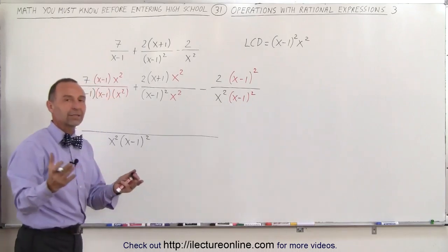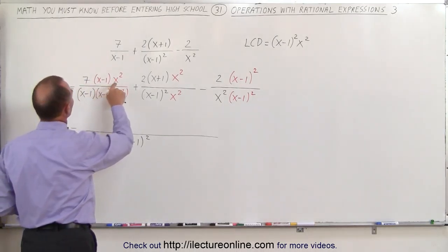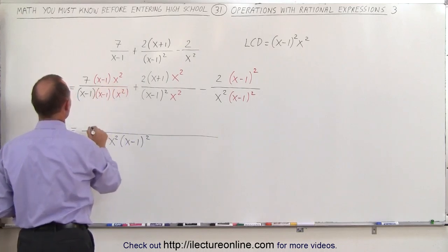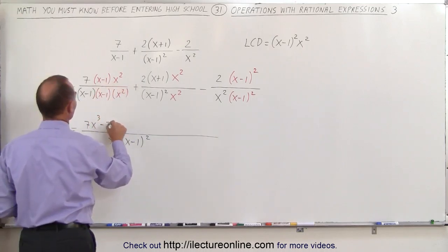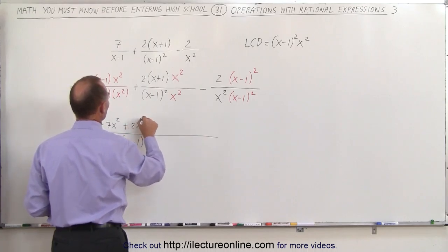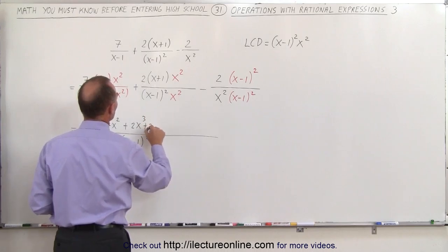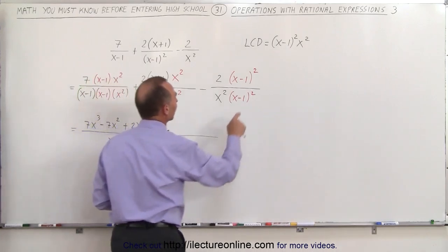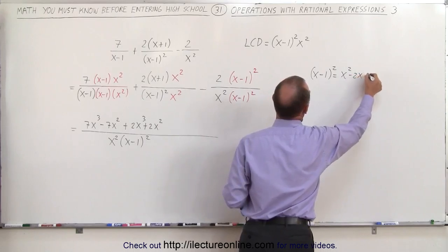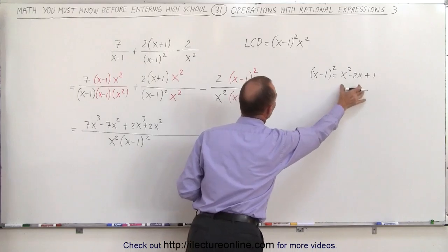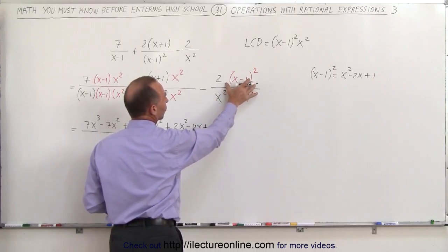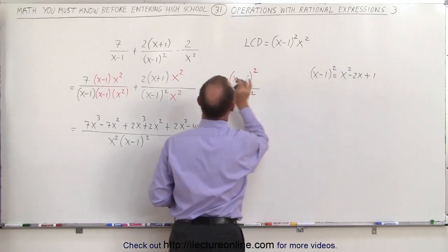I'm going to multiply these out and collect common terms for the numerator. First, 7 times x squared times x, and 7 times x squared times negative 1, gives 7x cubed minus 7x squared. Then 2 times x squared times x gives plus 2x cubed, and 2 times 1 times x squared gives plus 2x squared. Finally, x minus 1 quantity squared equals x squared minus 2x plus 1, and multiplying that times 2 gives plus 2x squared minus 4x plus 2.